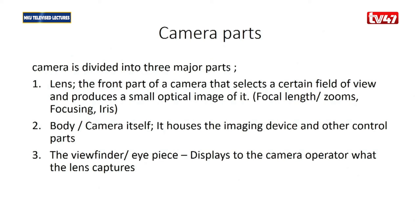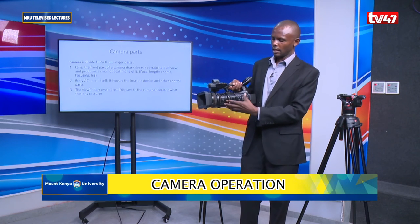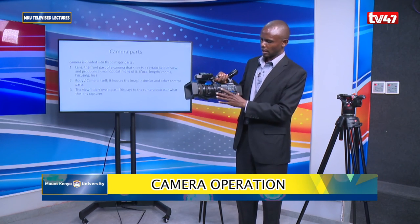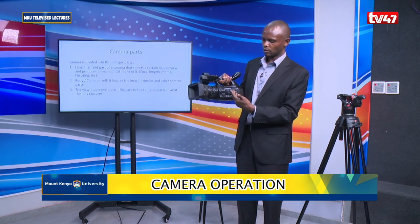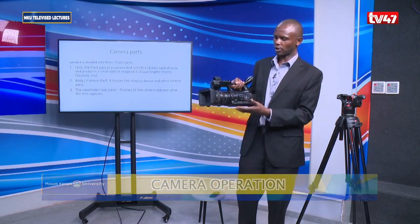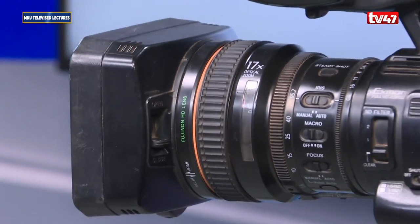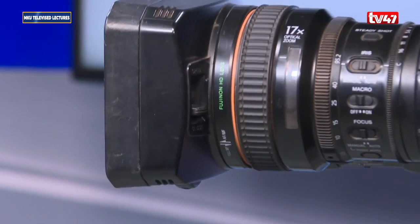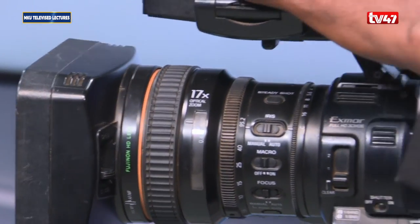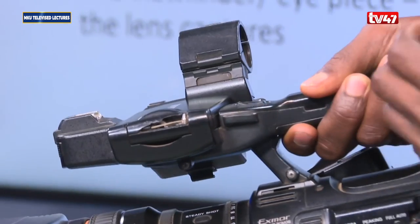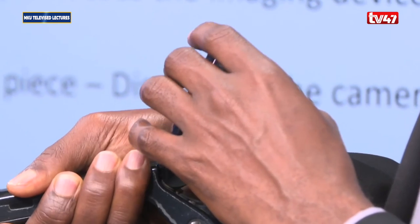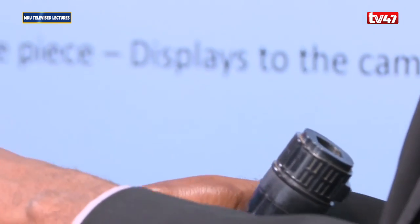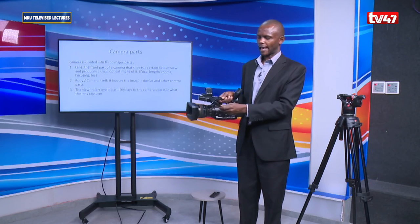The front part of the camera is usually what we refer to as the lens. The other part is usually the body of the camera, which we refer to as the camera body. And the third major part of the camera is the viewfinder, through which you can see what the camera lens is seeing via the eyepiece or through what we refer to as the LCD.